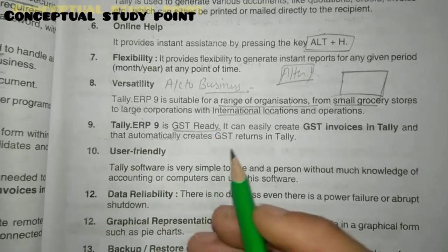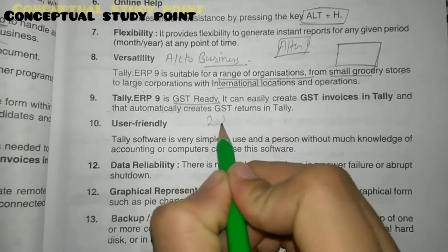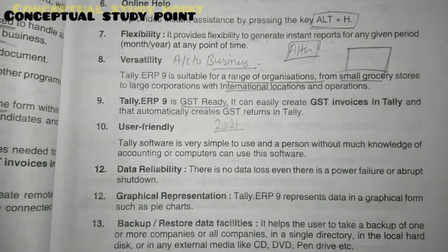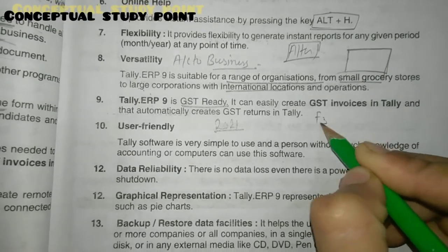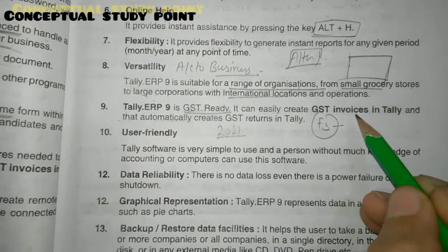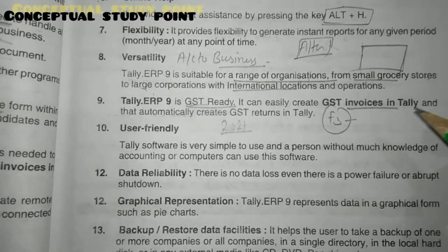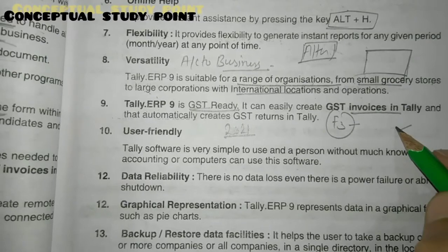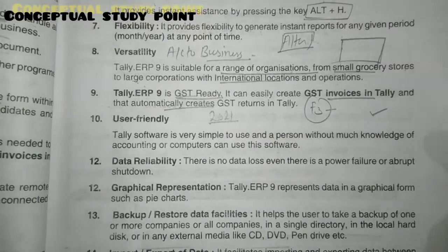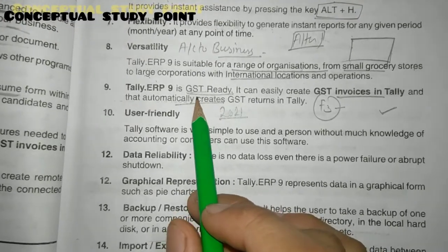Tally ERP9 is ready for GST. Since GST has been running since 2021, every person must pay GST. Tally ERP9 creates a GST column automatically. The F3 section records GST entries. When you open an account and click on GST, it will automatically create GST and generate the invoice — I will explain this from a practical point of view in detail later.